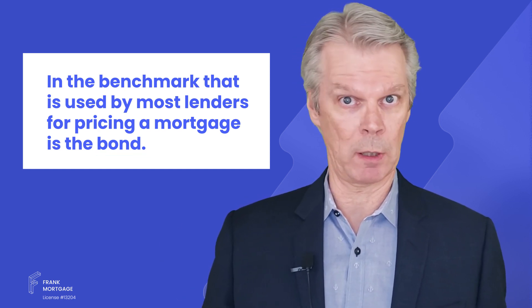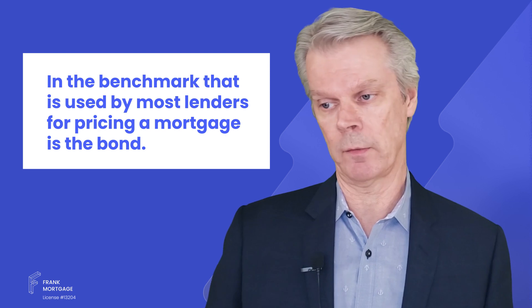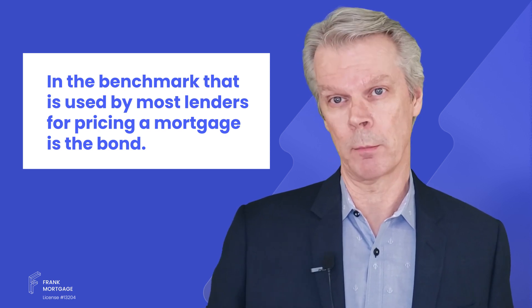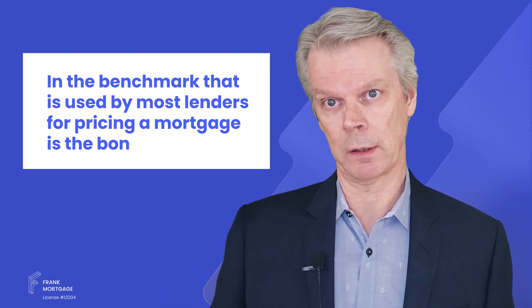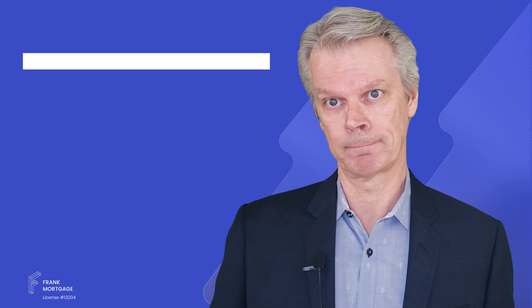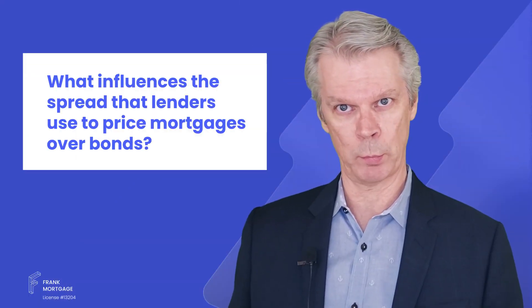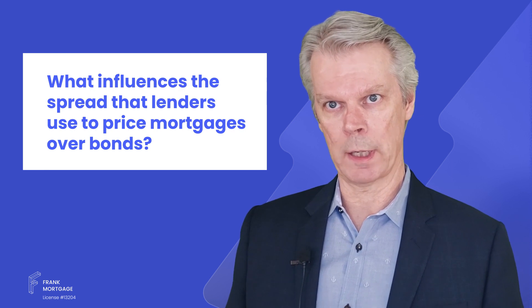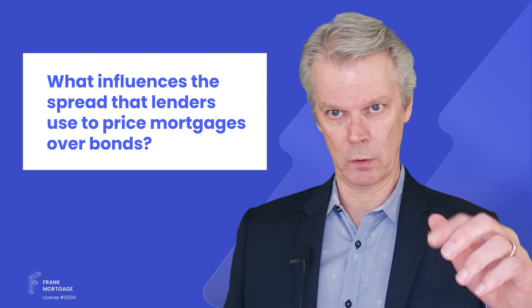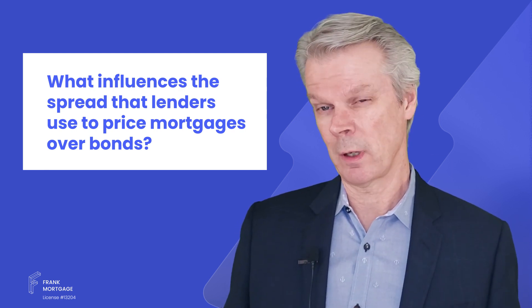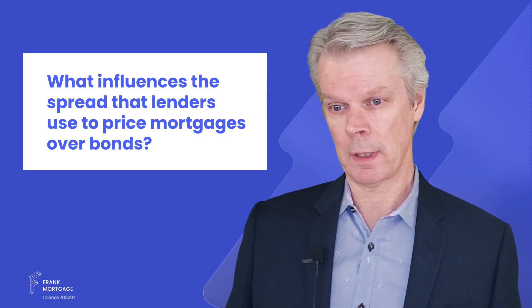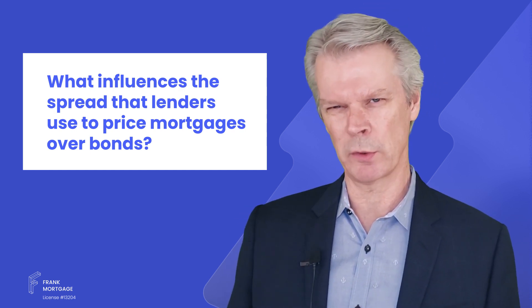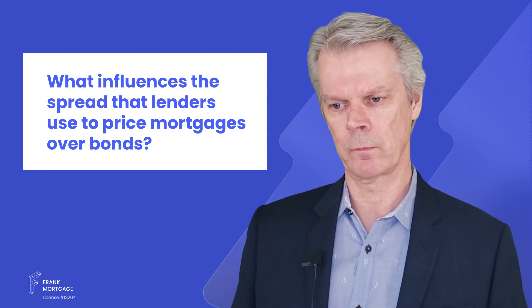So if it's a two-year mortgage, it might be a two-year bond. If it's a five-year mortgage, it might be a five-year bond, maybe a four-year bond, depending on how they view things and calculate their math. So what influences the spread that lenders use to price mortgages over bonds? There are a number of things that go into that. Every lender has their own unique pricing model, but the inputs are usually pretty similar.